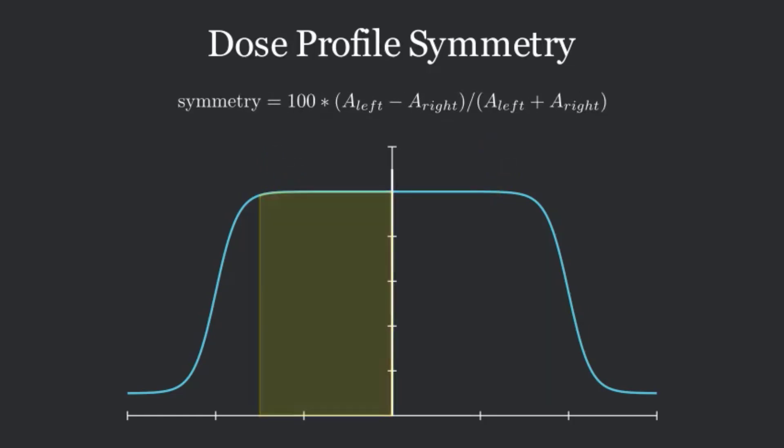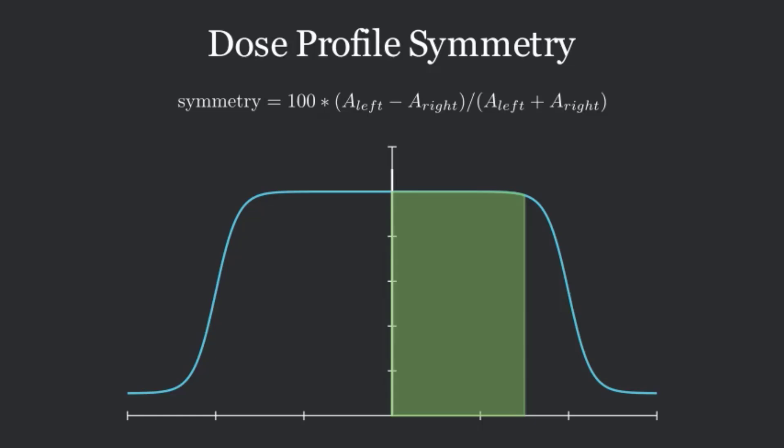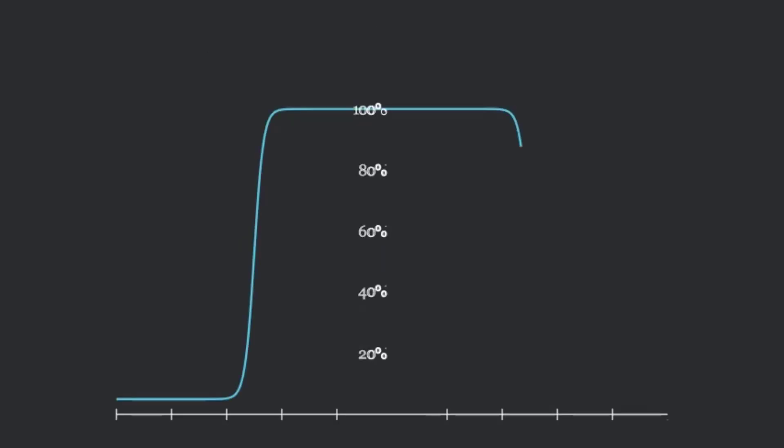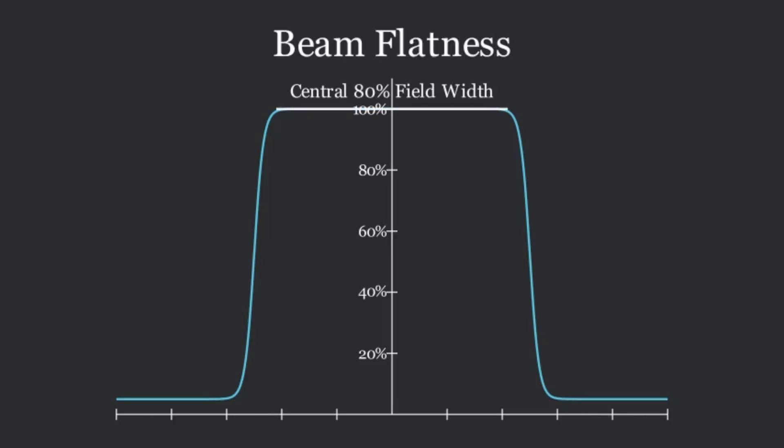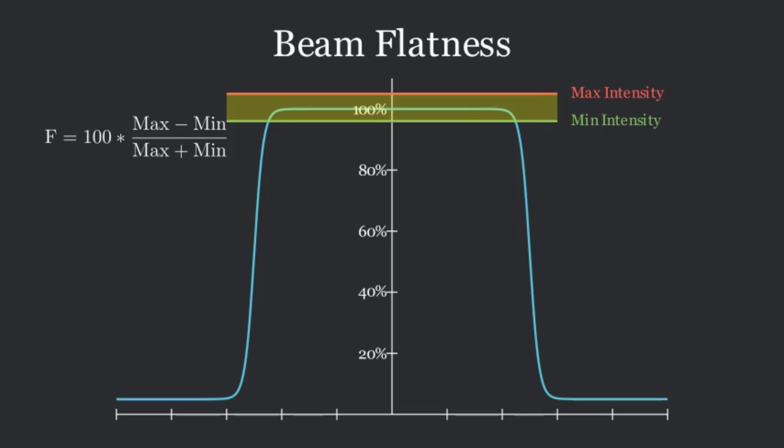The other definition is an area definition, where you look at the area, the left and the right. Next, let's review flatness. Flatness is a measure of the variance, or the maximum intensity, of the useful part of the beam.